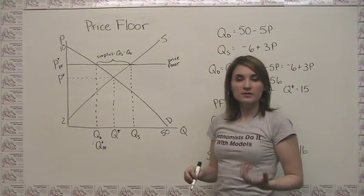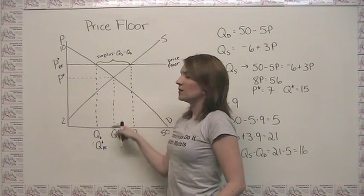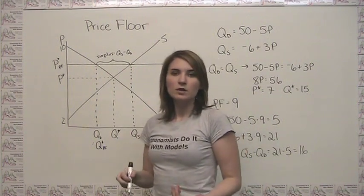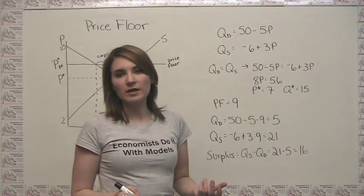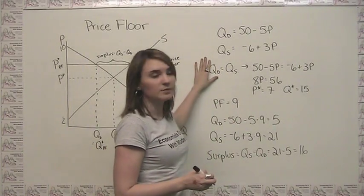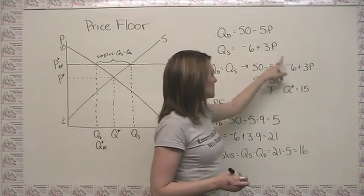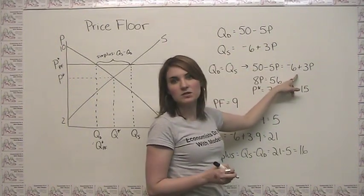The first thing that we want to do, because it gives us something to compare to, is to say what's the free market outcome in terms of price and quantity? So like always, our free market outcome is where quantity demanded and quantity supplied come together, or at the point where 50 minus 5p is equal to negative 6 plus 3p.